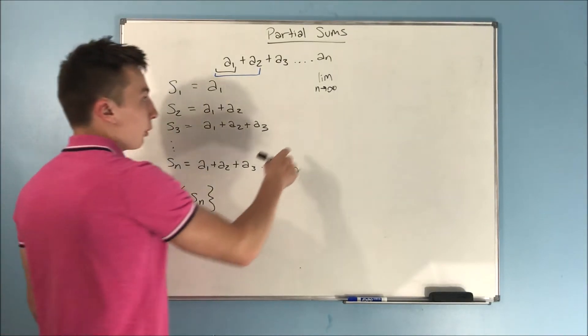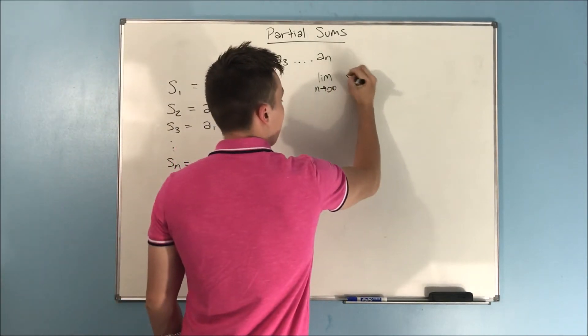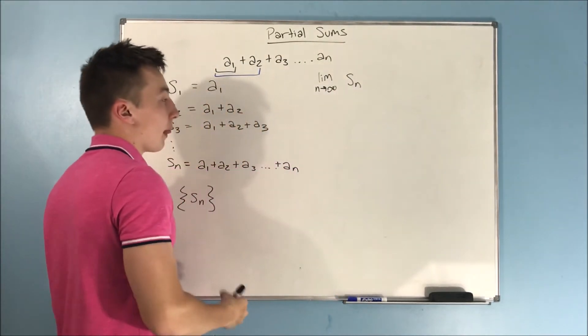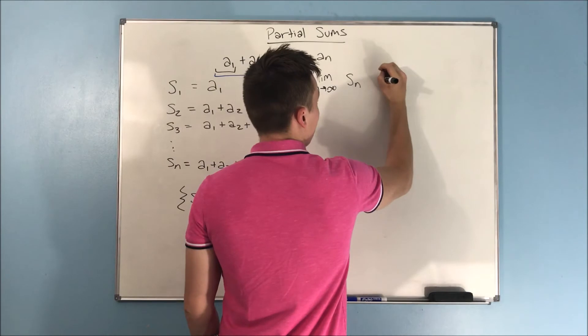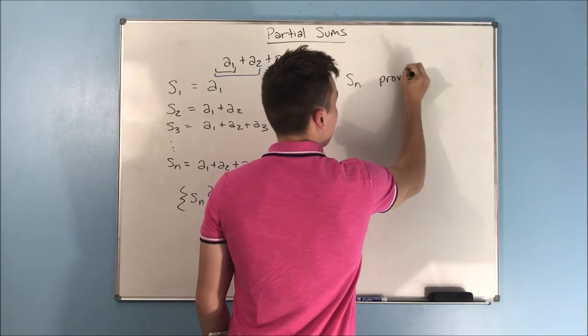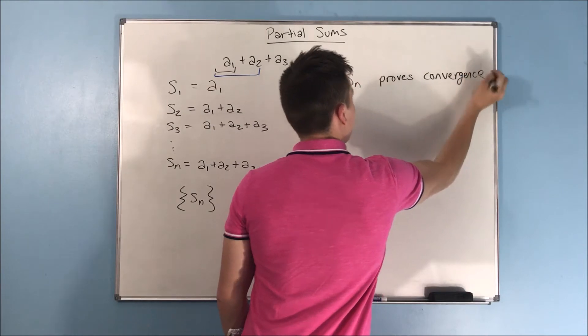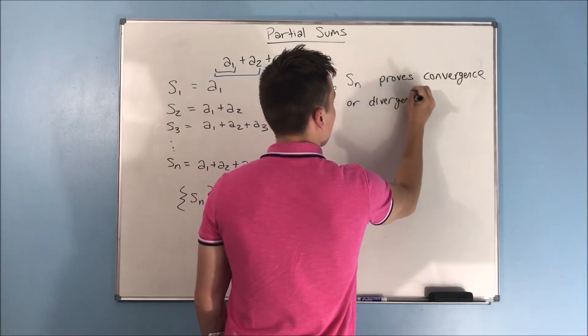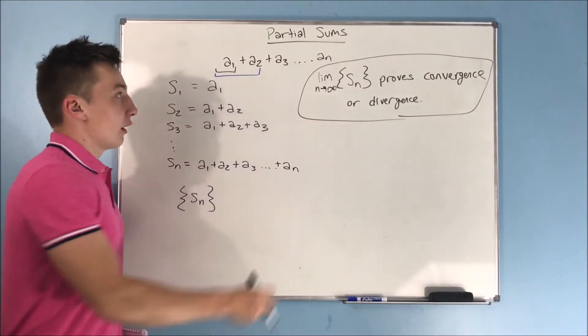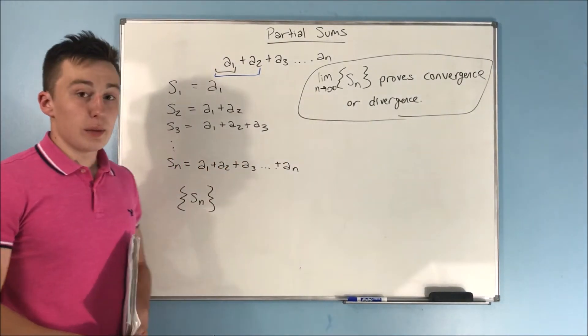So, if we take the limit as n approaches infinity of this s sub n, we can prove if it is convergent or divergent. And that is how we use partial sums.